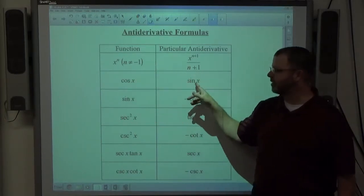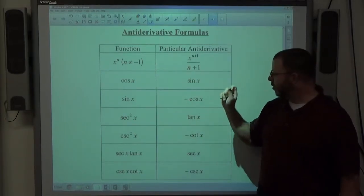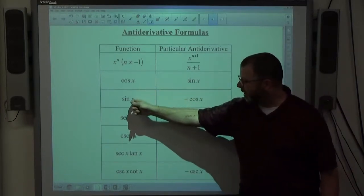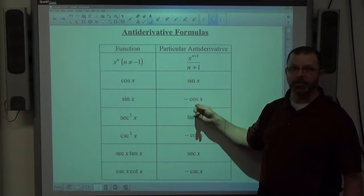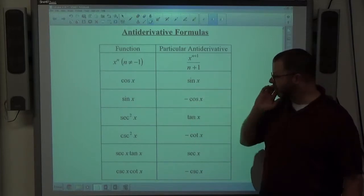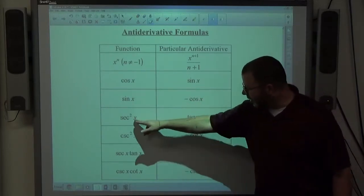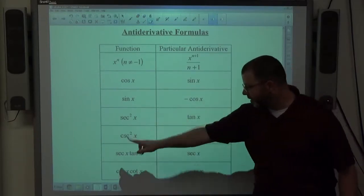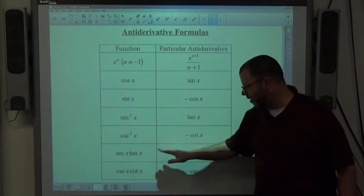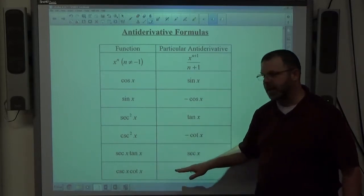So the anti-derivative of cosine is sine. The derivative of cosine is negative sine, so the anti-derivative of sine is negative cosine. Secant squared is the derivative of tangent. Cosecant squared is the derivative of cotangent, so notice that's negative. Secant tangent is the derivative of secant. Cosecant cotangent is the derivative of cosecant, but again it's negative.